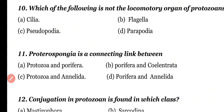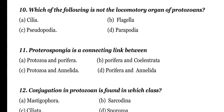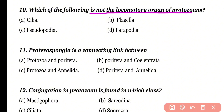Question number 10: Which of the following is not a locomotory organ of Protozoa? Cilia, flagella, pseudopodia, or parapodia? Correct answer is option D. Parapodia is not a locomotory organ present in Protozoa. Protozoa has three types of locomotory organs: cilia, flagella, and pseudopodia.